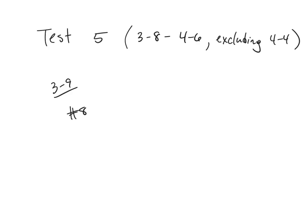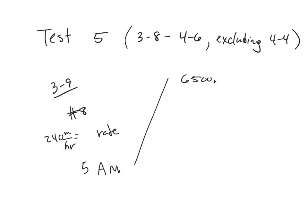A climber left base camp at 5 a.m. to ascend a 7,400 meter peak. The climber gained altitude at the rate of 240 meters per hour, and at 8 a.m. was at the 6,500 meter level. What was the altitude at the start? That's what we have to find.